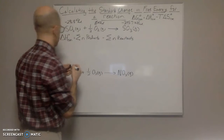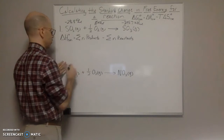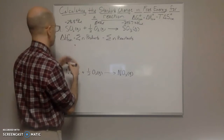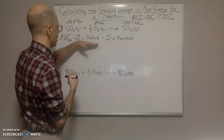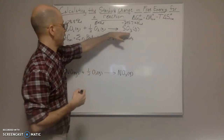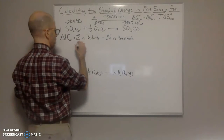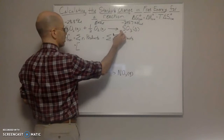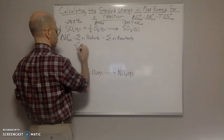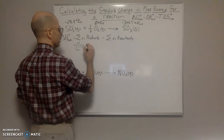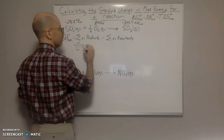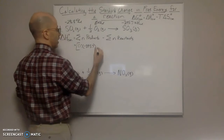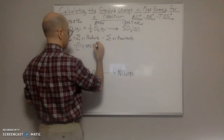So then what we do is plug it into this equation. The products first. The product here — we use the stoichiometric amount, so that's a one. So 1 times negative 395.7. And that's the only product.